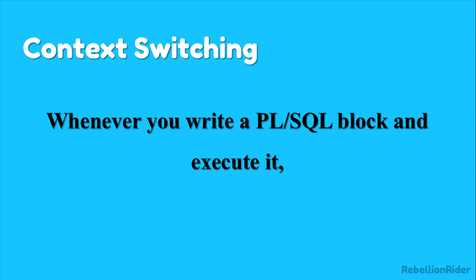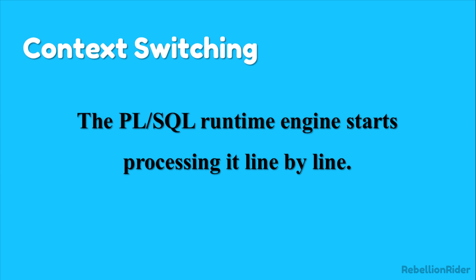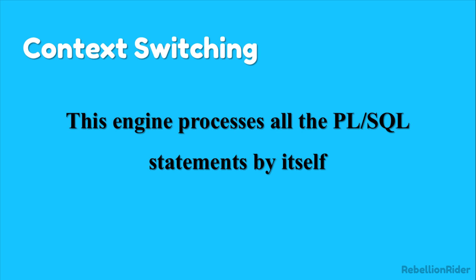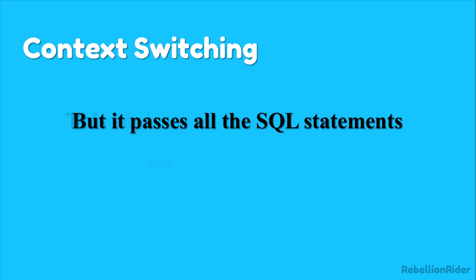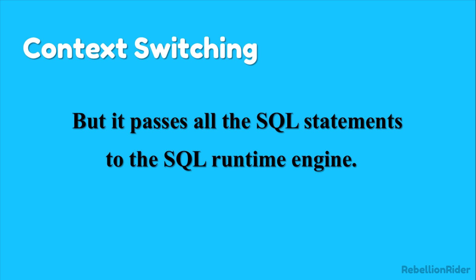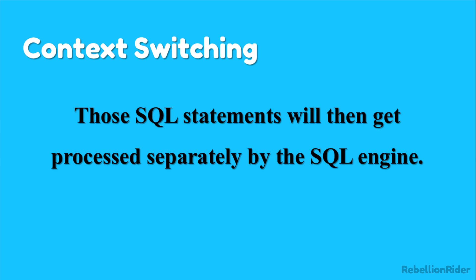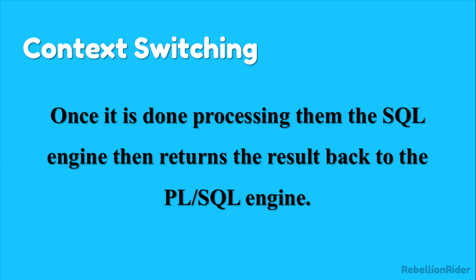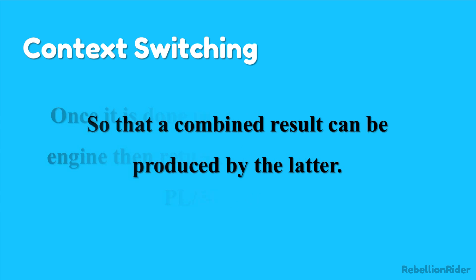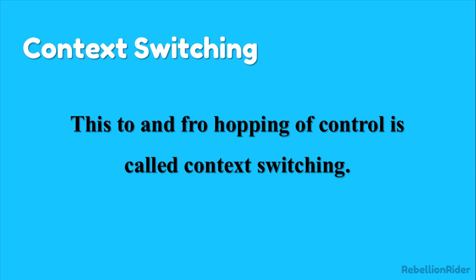Whenever you write a PL/SQL block and execute it, the PL/SQL runtime engine starts processing it line by line. This engine processes all the PL/SQL statements by itself, but it passes all the SQL statements coded in the PL/SQL block to the SQL runtime engine. Those SQL statements get processed separately by the SQL engine, which then returns the result back to the PL/SQL engine so that a combined result can be produced. This to-and-fro hopping of control is called context switching.